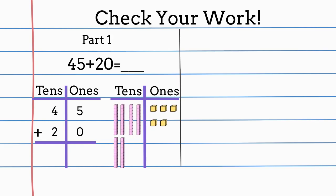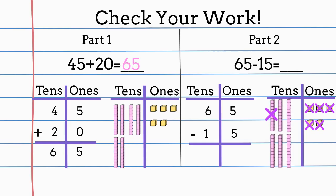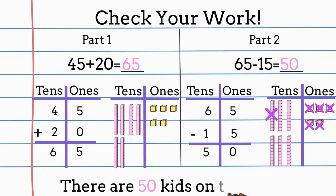Let's check your work. Our first equation is 45 plus 20 because there are 45 kids on the bus. If 20 more get on, then more tells us we will be adding on to 45. 45 plus 20 equals 65. For the second part of our problem, we take the number 65 because that's the total amount of kids on the bus now. Then it says that 15 get off. So if they get off, that means we're going to be subtracting because they're not there anymore. When we subtract 65 minus 15, it equals 50. There are 50 kids left on the bus.